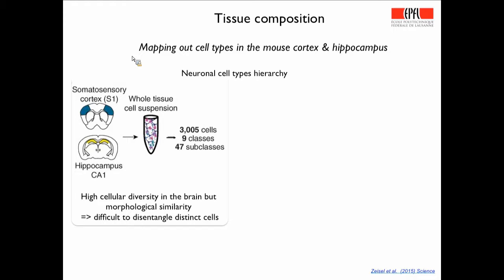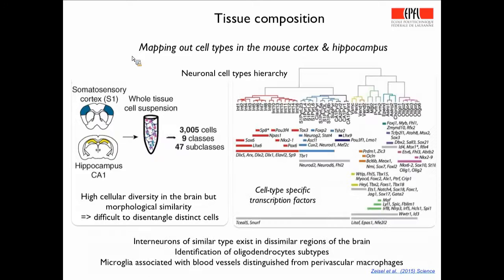A very impressive paper by the Linnarsson group analyzed whole tissue from the brain, including the somatosensory cortex and hippocampus, by analyzing thousands of cells. This allowed, for the first time, an incredible resolution of neuronal cell type hierarchies with specific transcription factors uncovered for each. Interesting findings include interneurons of similar type found in dissimilar brain regions, identification of oligodendrocyte subtypes, and microglia associated with blood vessels distinguished from perivascular macrophages — all features pertaining to the power of single-cell analyses.